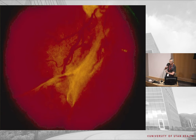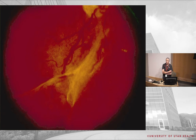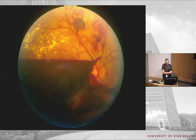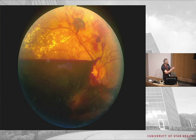If you don't treat diabetic neovascularization, you can get not only chronic hemorrhage but fibrosis along the arcades. The ultimate end stage is a pre-retinal hemorrhage. When blood is between the retinal surface and the vitreous, it forms a boat shape — flat on top and curved on the bottom. This pre-retinal boat-shaped hemorrhage is a sign of bleeding from neovascularization.